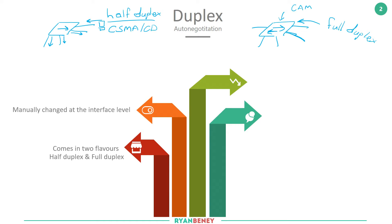The auto-negotiate feature came out around the time of 10Base-T to help combat these problems. Ideally we wanted plug-and-play — hubs to hubs and switches to switches would all play nice, with no collisions on the segment, because everyone would revert back to half duplex if the device plugging in was only half duplex capable.